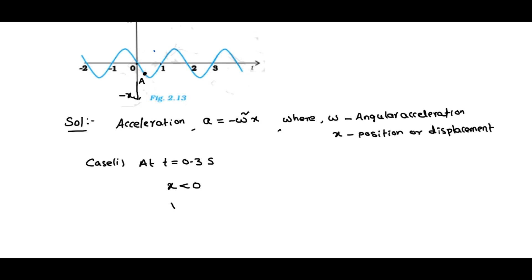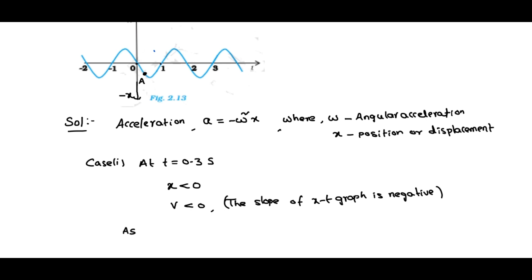While coming to velocity, the velocity also will be less than 0, because the slope of the x-t graph is negative. And while coming to acceleration, using the formula a equals minus omega squared x, and since x is negative here, negative times negative becomes positive. So a will be more than 0. These are the signs of x, v, and a at time t equal to 0.3 seconds.